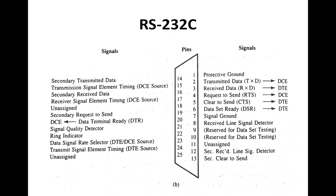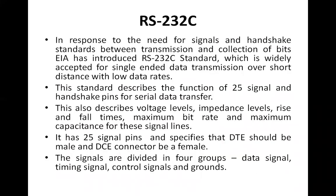The RS-232C pin connector contains 25 pins. The different signals assigned to these pins are divided into four groups: data signals, control signals, timing signals, and ground.